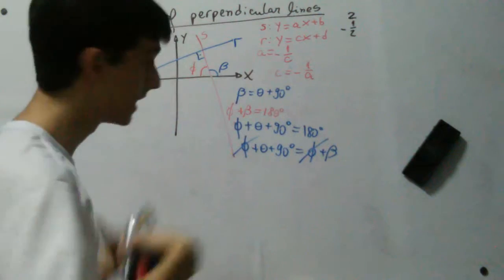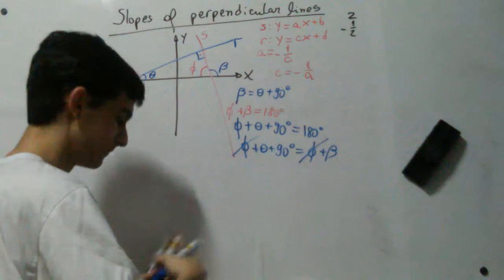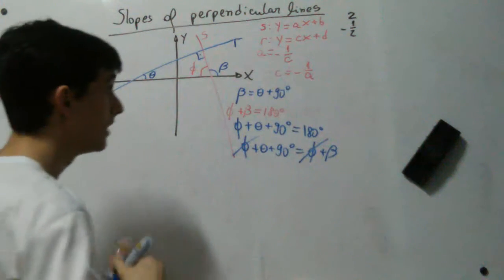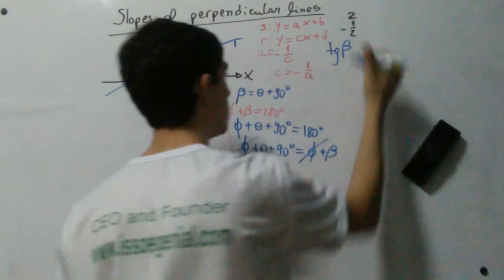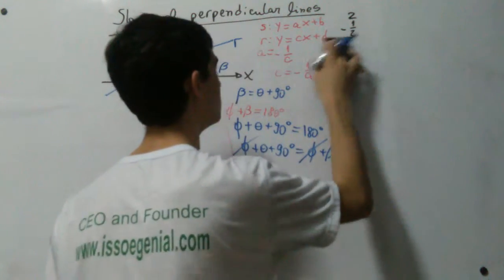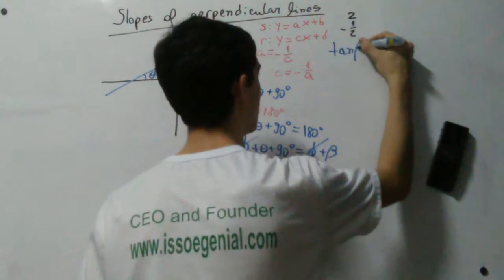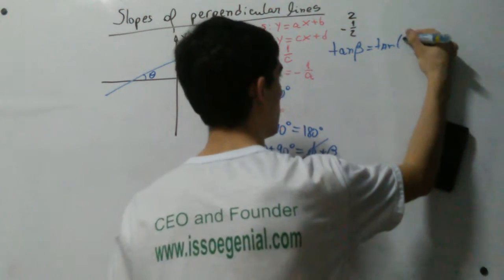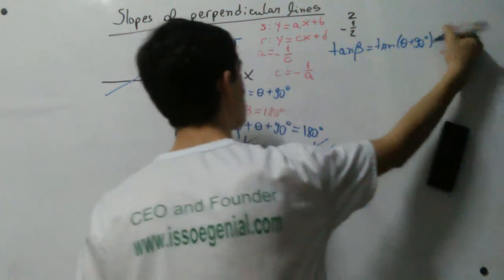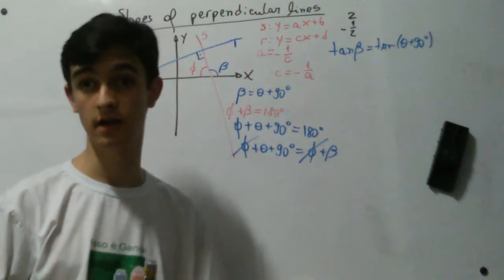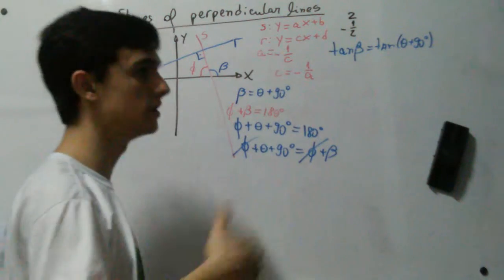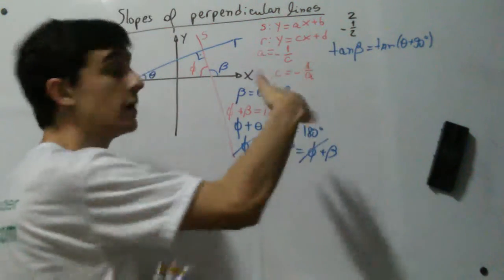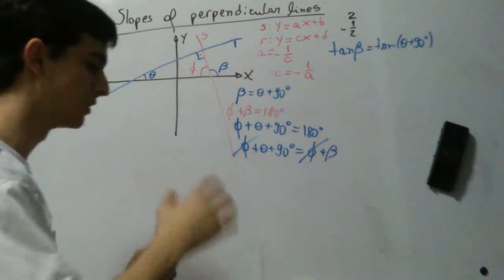Now that we have this, we can proceed with the proof. Since beta equals theta plus 90 degrees, we can say that the tangent of beta equals the tangent of theta plus 90 degrees. We know equations in trigonometry to calculate the tangent of a sum of angles. However, that equation wouldn't work here. The tangent addition formula says tangent of (A + B) equals (tangent A + tangent B) over (1 minus tangent A times tangent B), but one of our angles is 90 degrees.